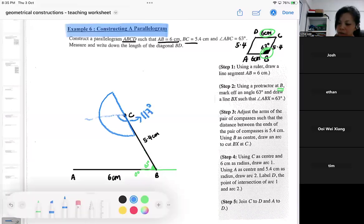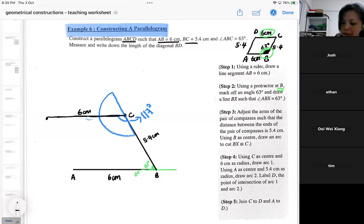So after that, you can draw a 6 centimeter. Then you can draw a 6 centimeter. So mine is a rough diagram. Then after that, you just draw. So that will be how the parallelogram comes about.